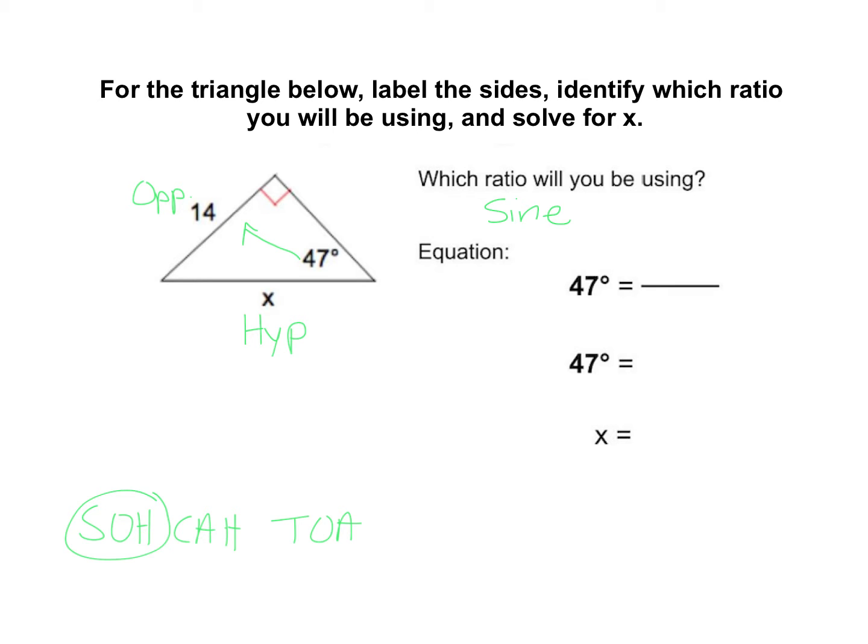We can go ahead and write our equation. The sine of the angle, so sine of 47 degrees, is equal to, and then we need O, so 14, over hypotenuse, which is x.